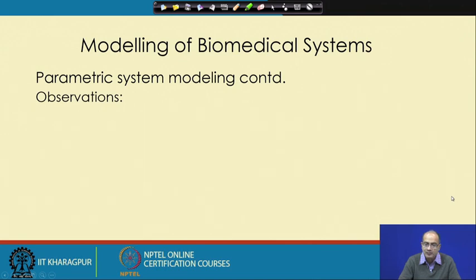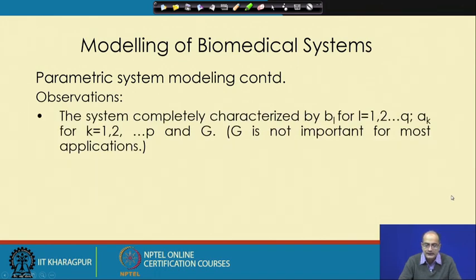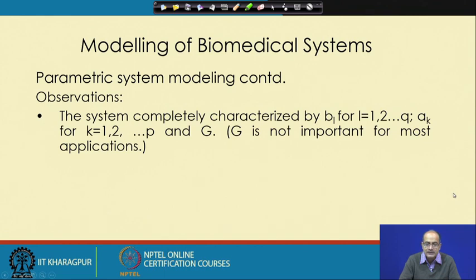Taking the Z-transform of this difference equation, we get a new form and can derive the transfer function H(z). We get two polynomials consisting of A_k and B_l: the B_l part goes in the numerator, the A_k part goes in the denominator, and we also get the gain factor G. The system is completely determined by B_l and A_k. G provides uniform scaling irrespective of frequency, so if a scaled version of the output is acceptable, G can be set aside.